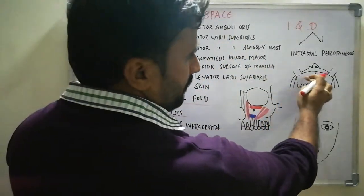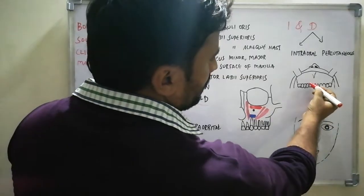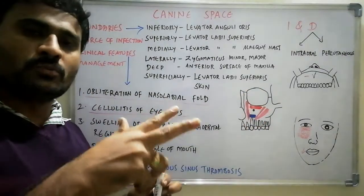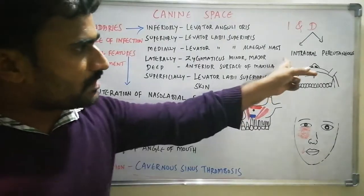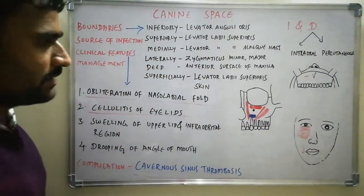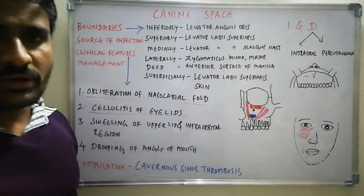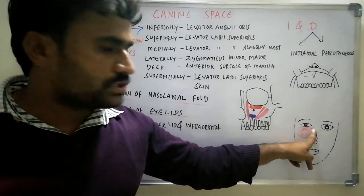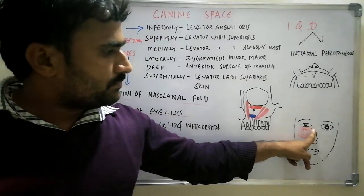This is the maxillary labial and buccal vestibule. You have to take an incision high in the maxillary vestibule in the region of the lateral incisor or canine, and bluntly open the abscess cavity to drain the pus. The intraoral approach provides a dependent drainage route. For the percutaneous approach, you can make a small incision at the medial angle of the eye and drain the pus, but it does not provide dependent abscess drainage.